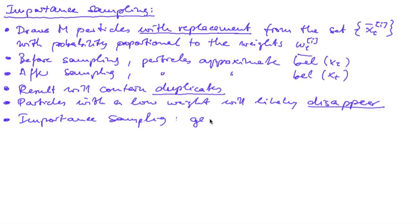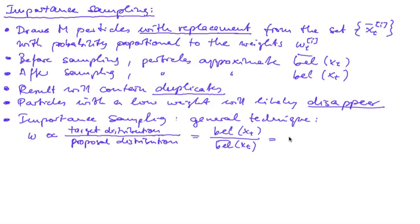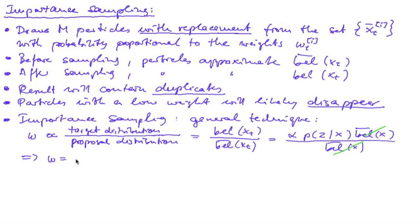Importance sampling is a general technique where the weights have to be selected proportional to our target distribution divided by the proposal distribution. In our case, the target distribution is our belief, whereas the proposal distribution is our predicted belief. So the weight is alpha times the probability of a measurement given the state times the predicted belief, divided by the predicted belief. Therefore, our weight can be chosen to be the probability of the measurement given the state — the alpha factor is of no importance because the weights don't have to be normalized.